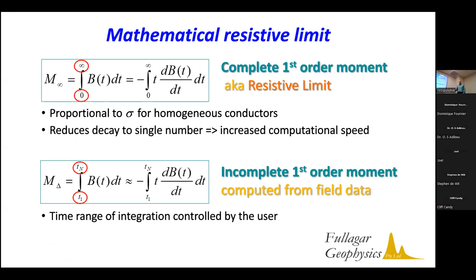I want to draw the distinction between the mathematical resistive limit and the physical resistive limit, as this caused some confusion. In the mathematical definition, the resistive limit is the integral over all time. When dealing with a simple homogeneous conductor in free space, the result will be proportional to conductivity — a nice mathematical result that reduces the decay to a single number, which is advantageous from a computational point of view.